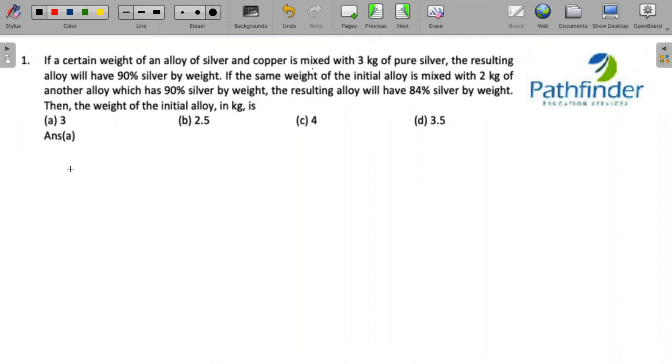CAT 2021 QA Slot 3, Question Number 1. If a certain weight of alloy of silver and copper is mixed with 3 kg of pure silver, the resulting alloy will have 90% silver by weight. If the same weight of initial alloy is mixed with 2 kg of another alloy which has 90% silver by weight, the resulting alloy will have 84% silver by weight. Then the initial alloy in kg is...